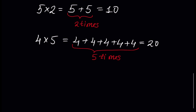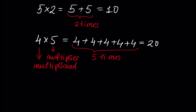In the case of 4 times 5, the number 4 is called the multiplicand, the number 5 is called the multiplier, and 20 is called the product. The product is also an element of the set of real numbers. Next, let's talk about division.